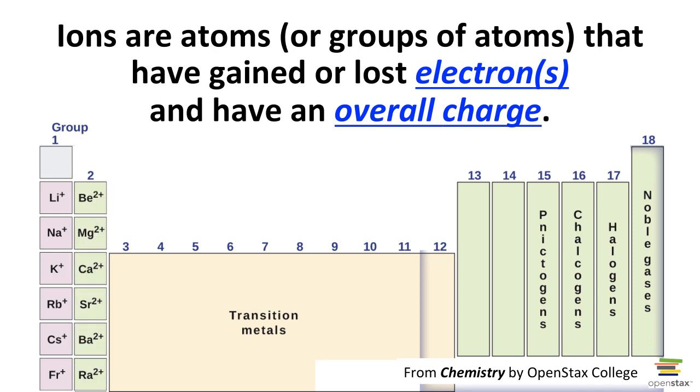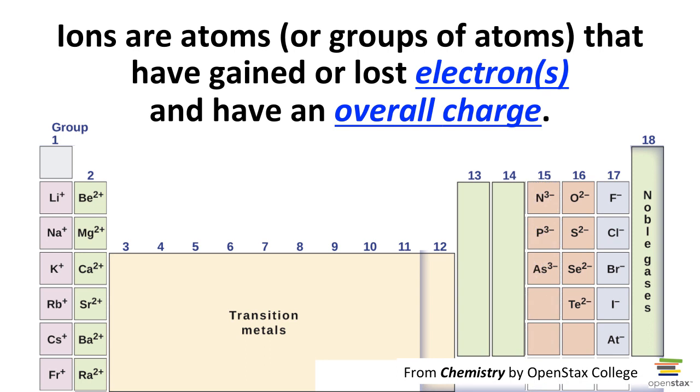Alkaline earth atoms can easily lose two electrons and form positive two charged ions. The halogens, fluorine, chlorine, bromine, etc., relatively easily gain one electron and form a negative one charged ion. The oxygen column forms negative two charged ions. Nitrogen column relatively easily forms negative three charged ions.